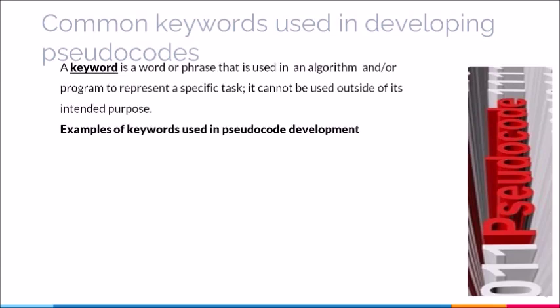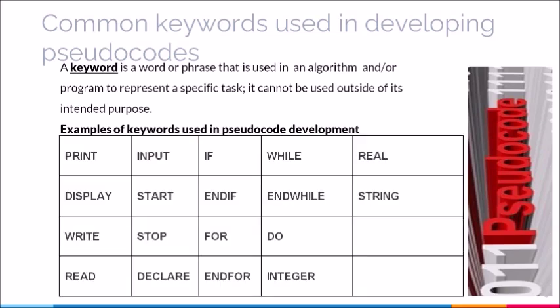There are a number of keywords and phrases that are commonly used when developing pseudocode. A keyword is a word or phrase that is used in an algorithm or a program to represent a specific action. These keywords cannot be used outside of their intended purpose. Examples of these keywords include print, display, write, read, and the list goes on. These are not all keywords represented in pseudocode, but these are the most commonly used ones. As we go along, we will be introduced to other examples.